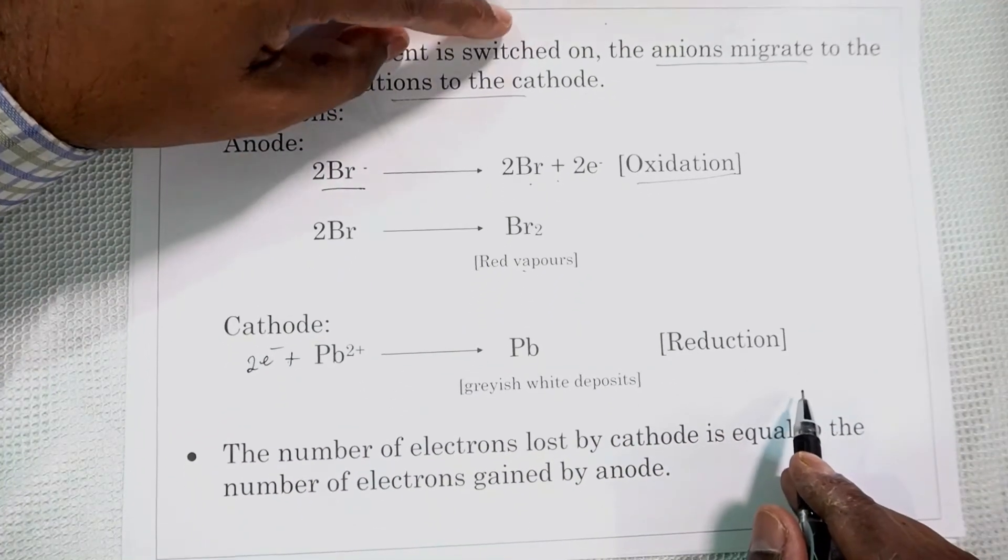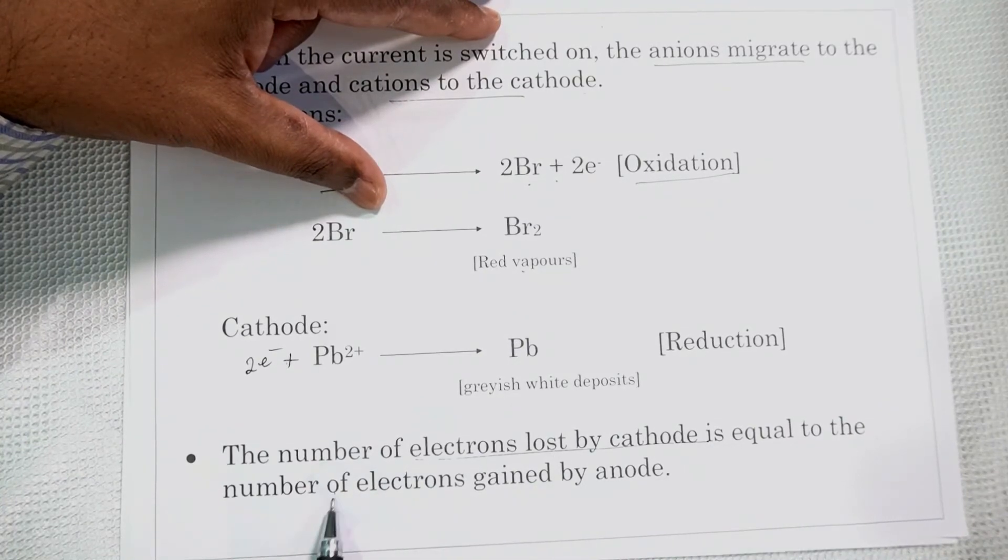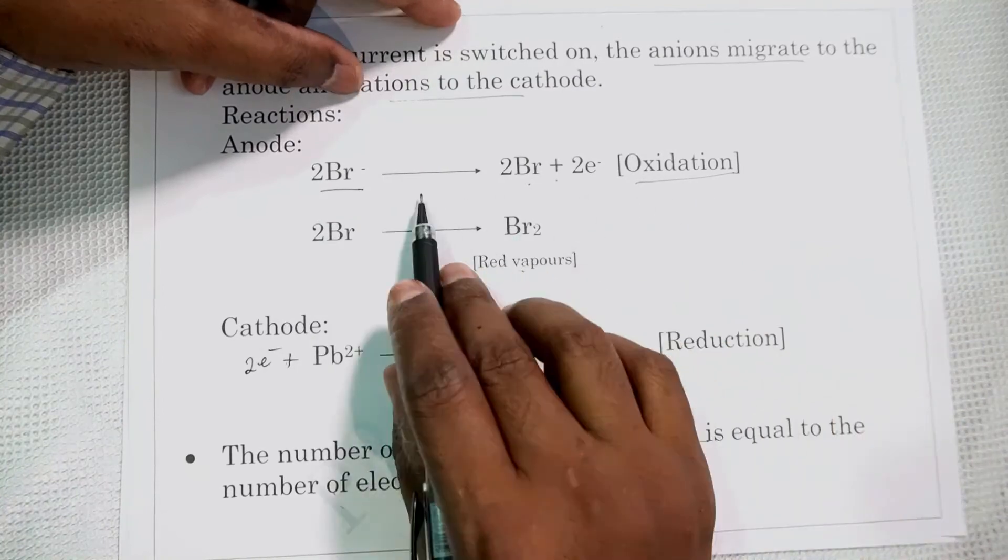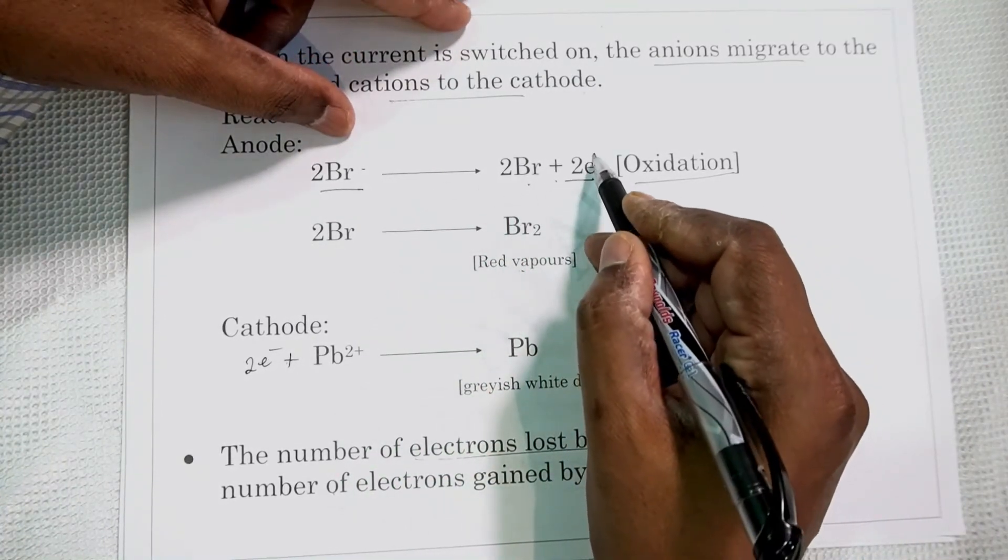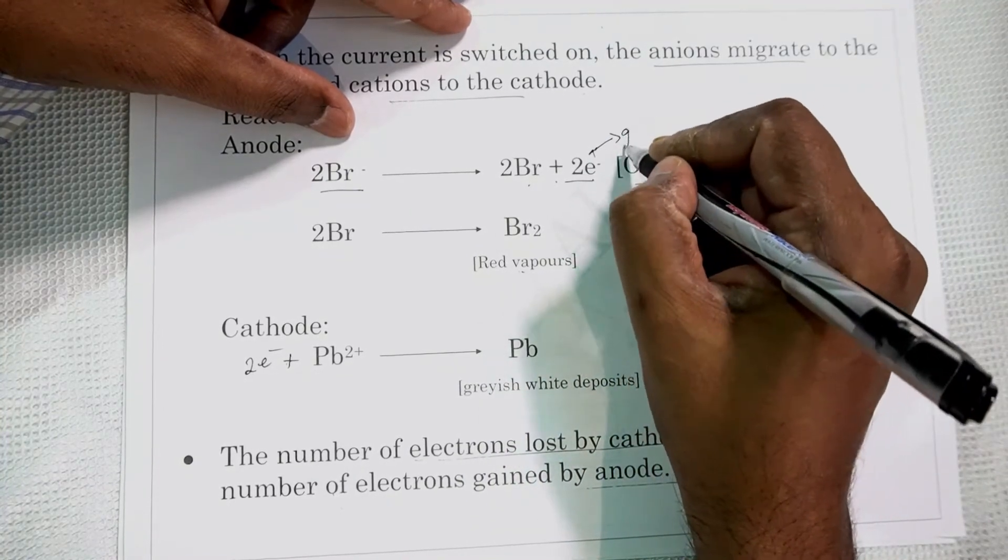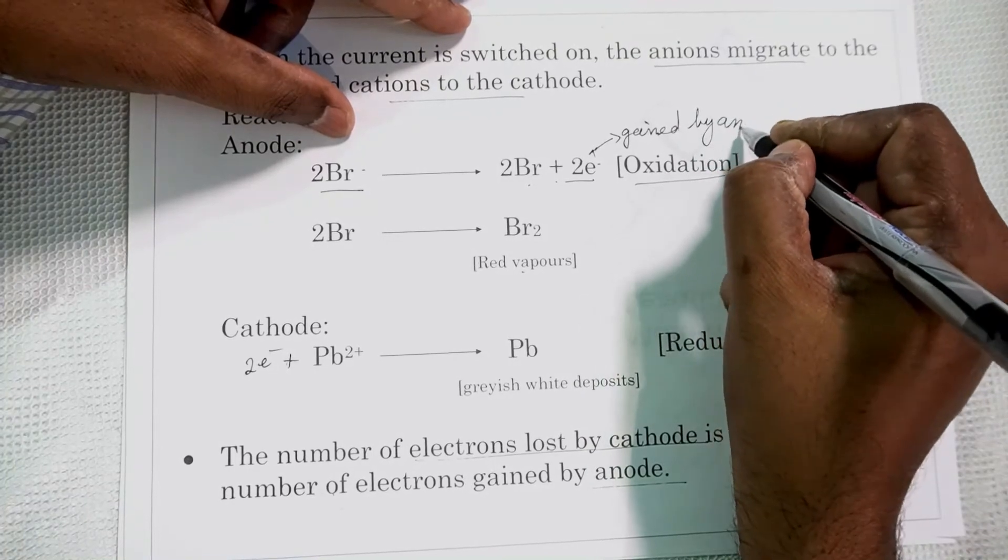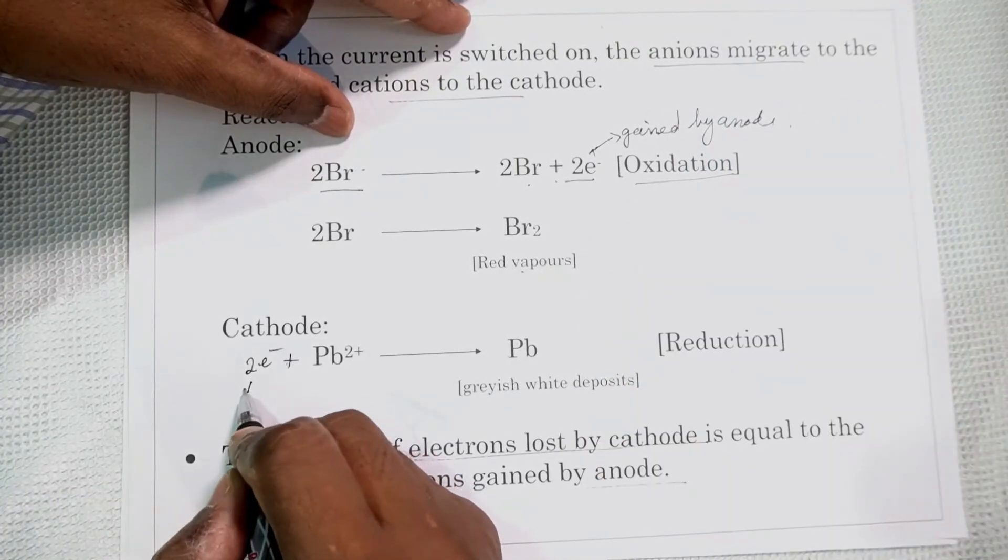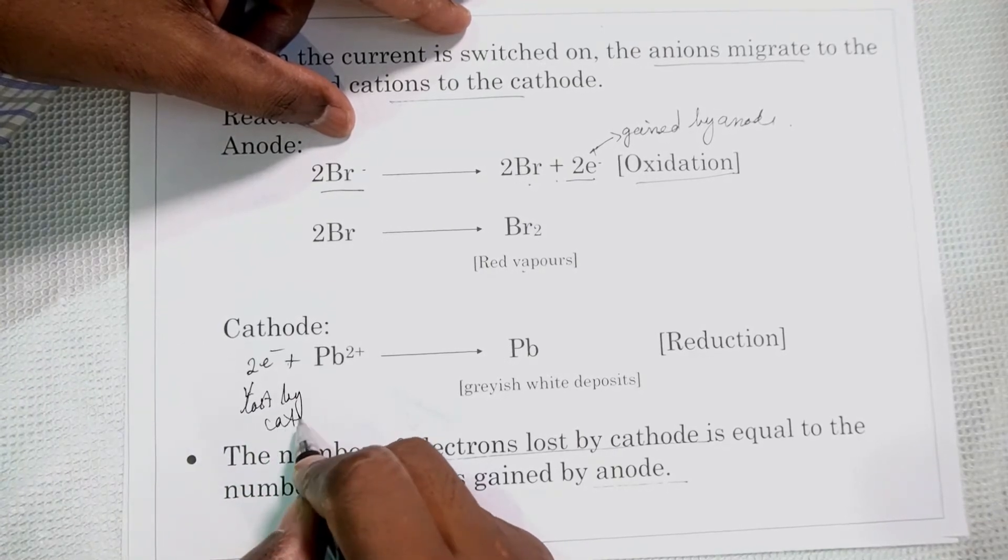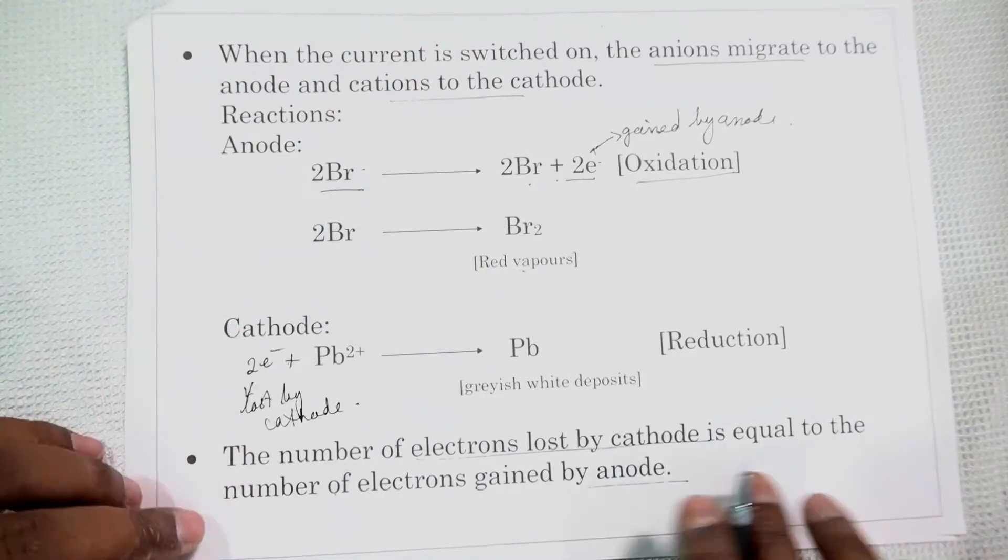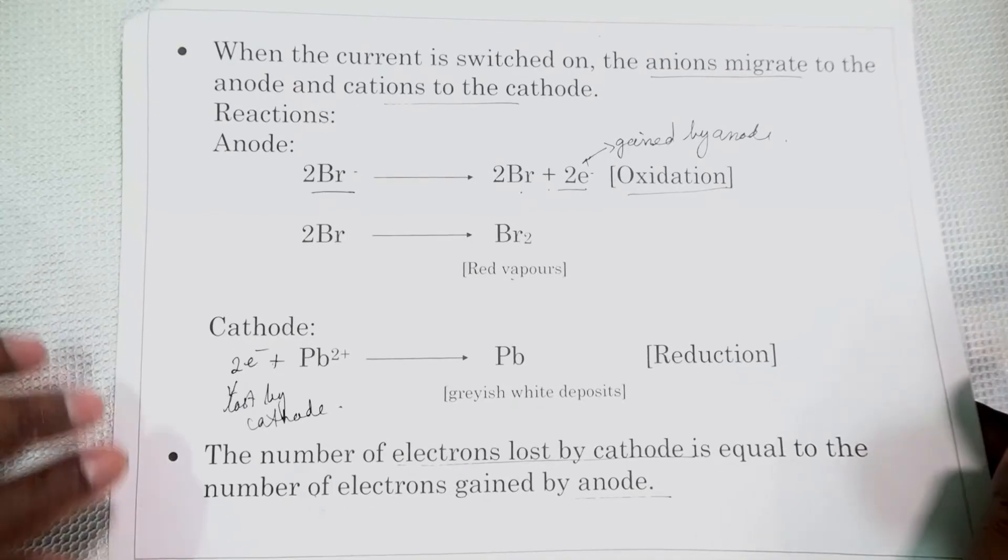Now as per the principles of electrolysis, the number of electrons lost by cathode is equal to number of electrons gained by anode. You can see that here. Here at anode the substance is losing two electrons which will go to the anode. So in other words the two electrons are gained by anode. Here these two electrons are actually lost by cathode. So number of electrons lost by cathode is equal to number of electrons gained by anode. So this is the principle of electrolysis.